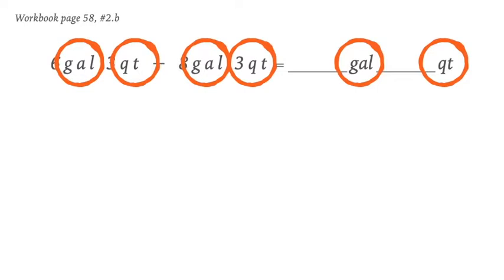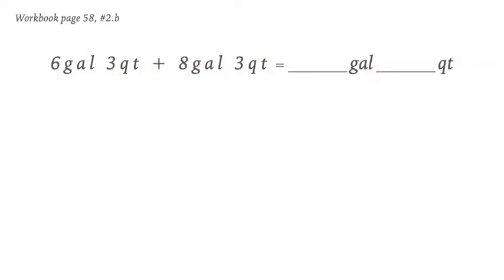For instance, three quarts and three quarts equals six quarts. And then now we can go ahead and calculate for gallons, which is six plus eight gallons, equivalent to yes, 14 gallons. And we can go ahead and write that in here.